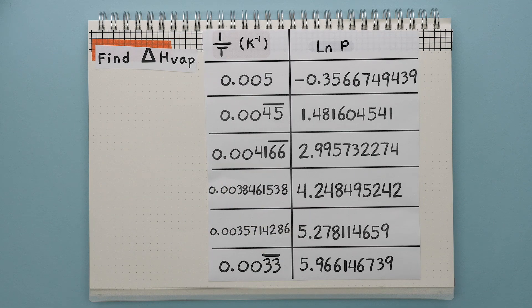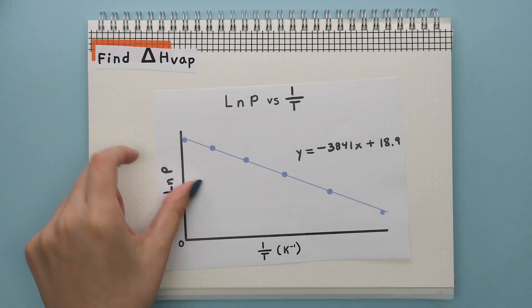When we do this and have the correct values, we can graph this data and add a trend line. Now that we have our equation of the trend line, we can use this equation to find the heat of vaporization.